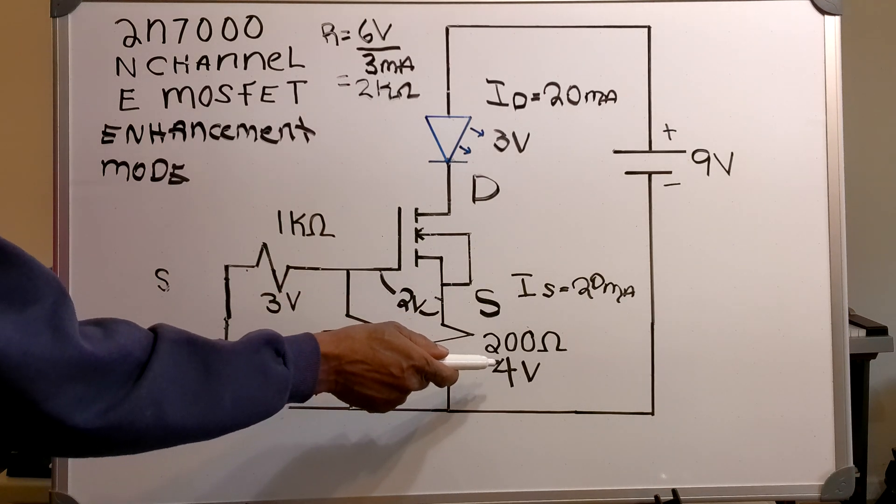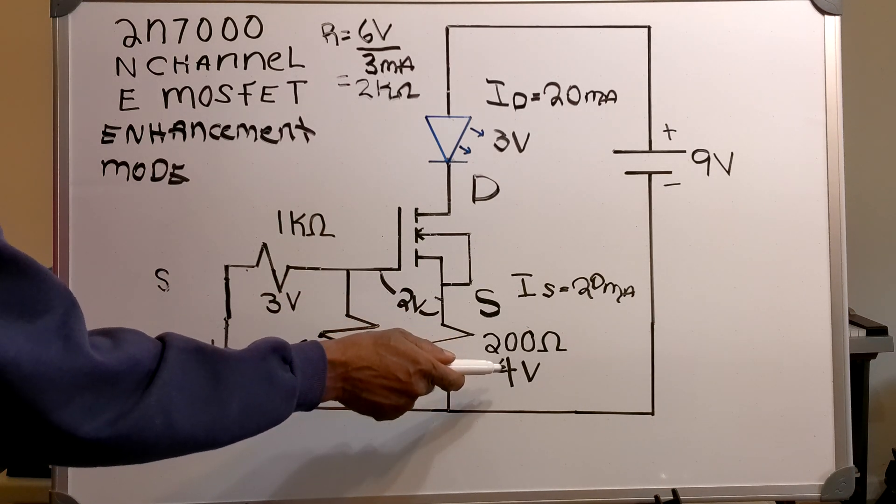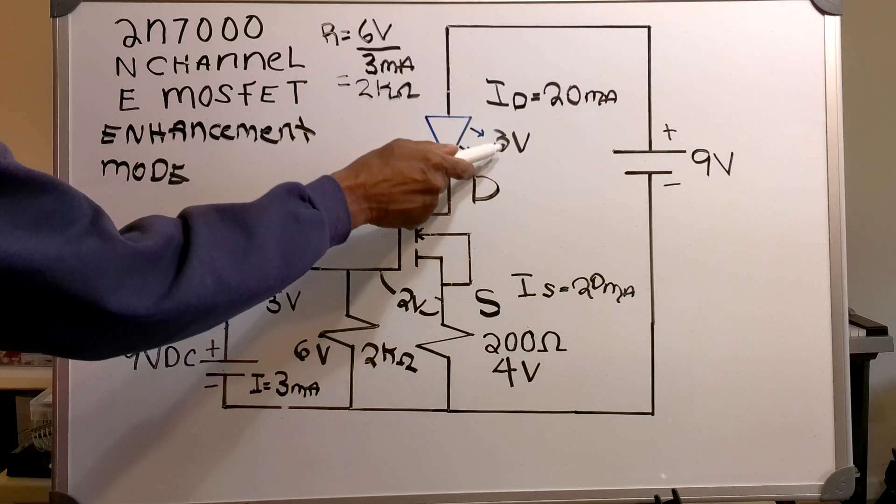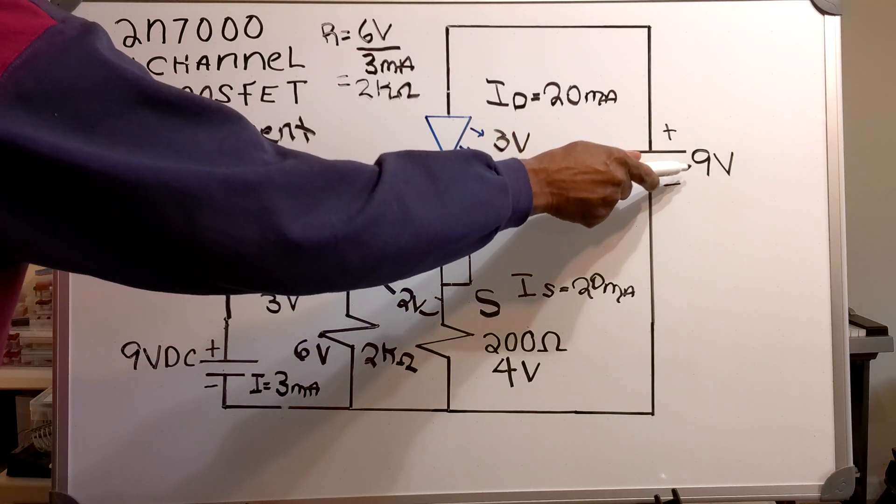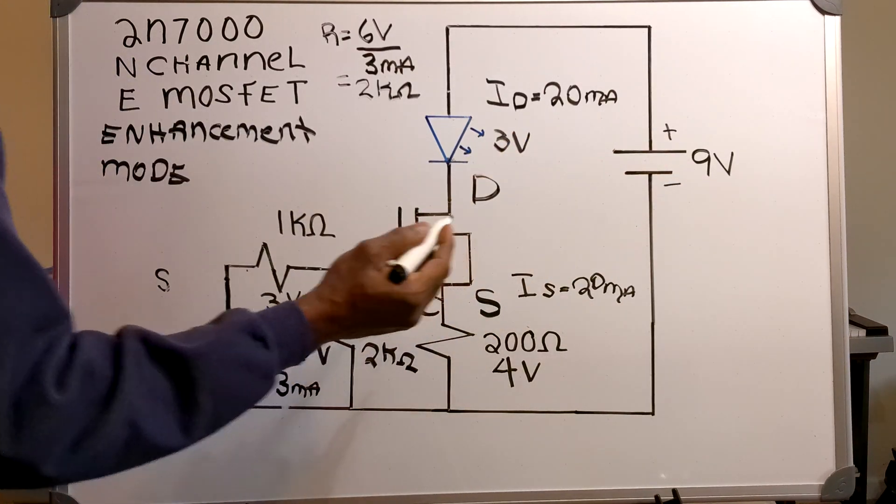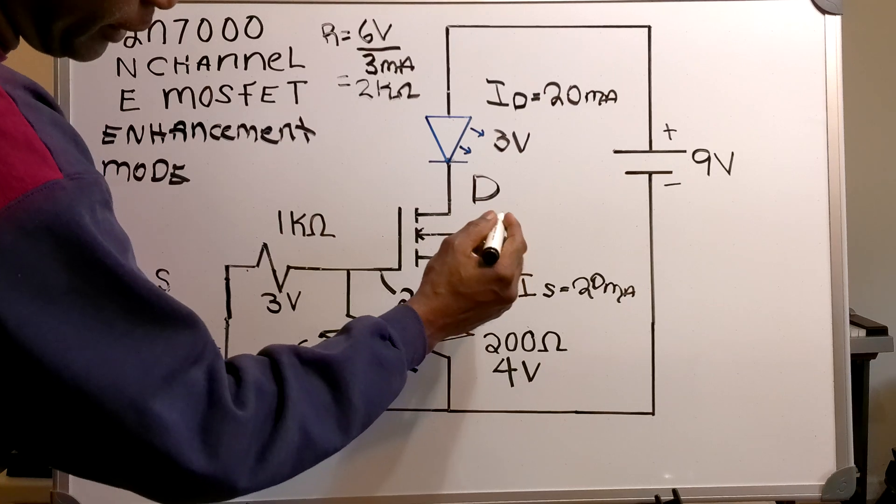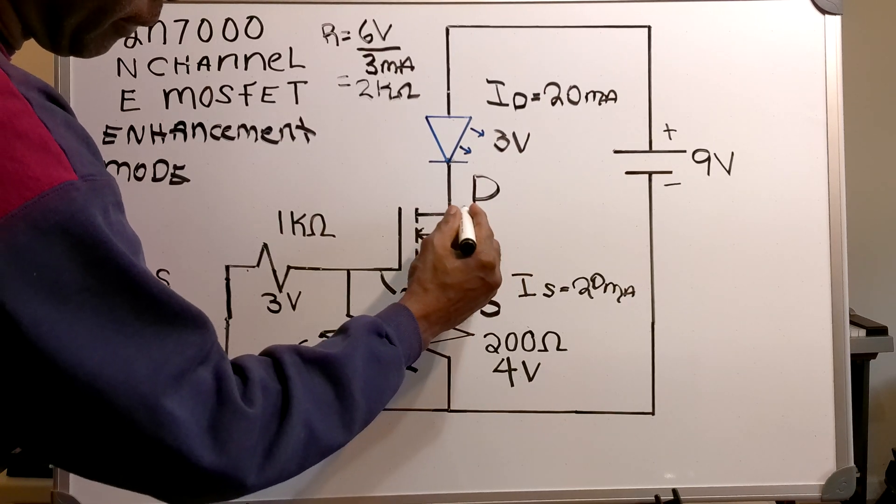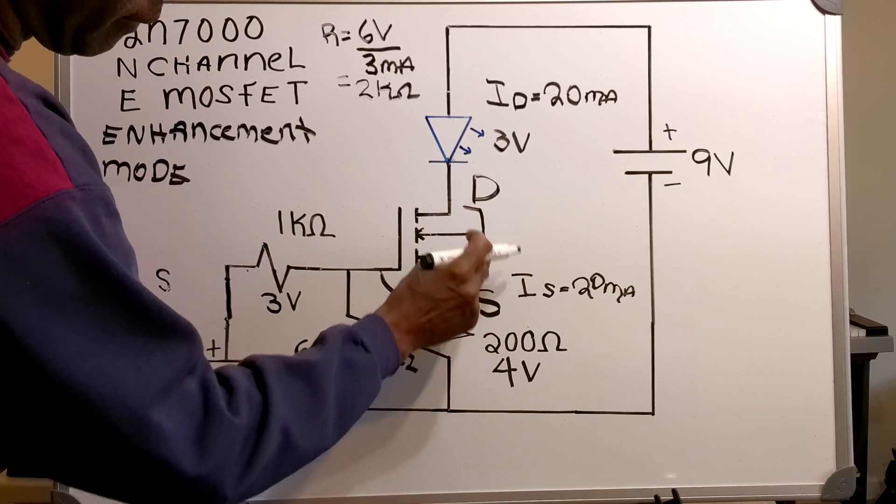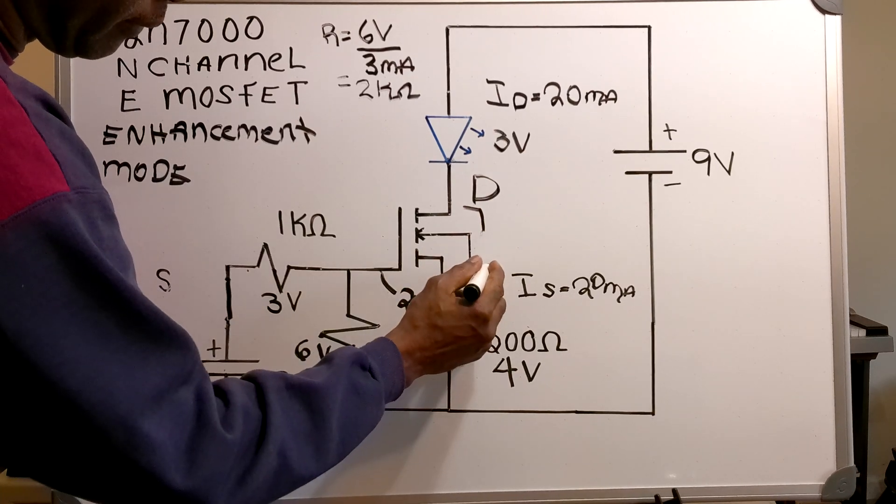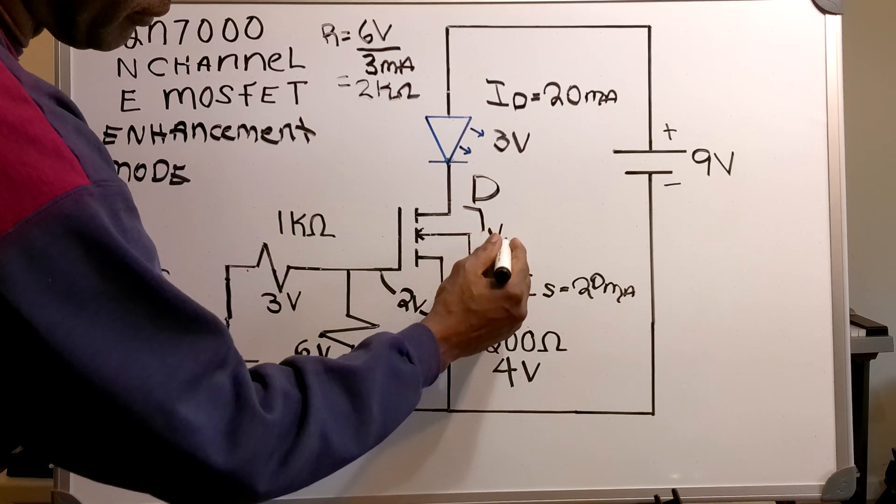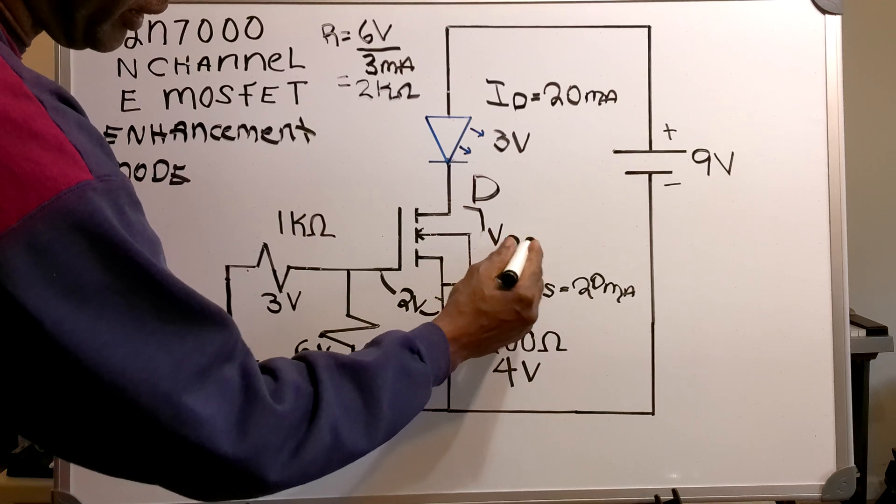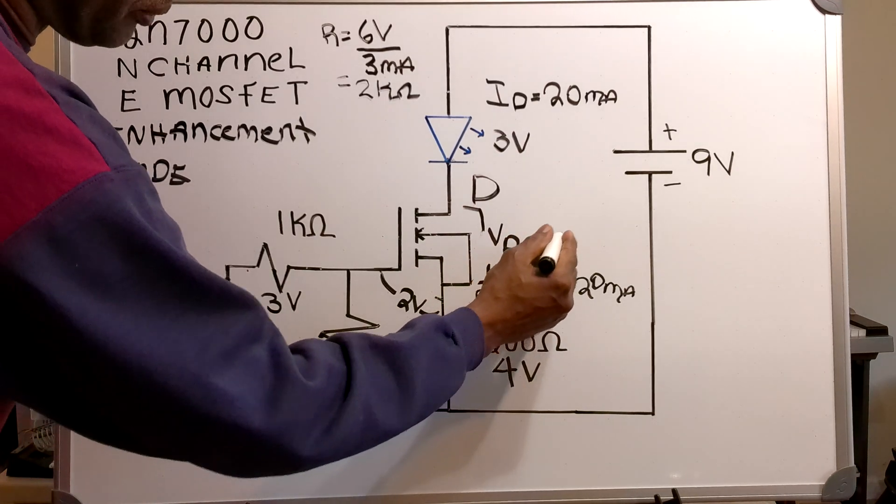So now, I've got 4 volts here. I've got 3 volts here for a total of 7 volts. And I've got a total of 9 volts. So, my VDS will be 2 volts.